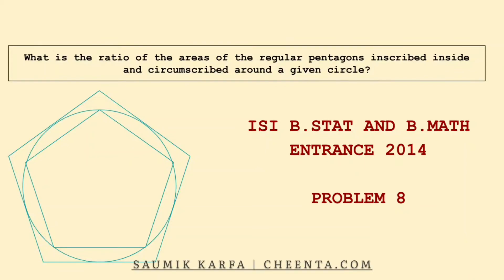Here is the ISI B-STAT and B-MATH entrance 2014, problem number 8. This problem asks: what is the ratio of areas of the regular pentagons inscribed inside a circle and circumscribed around a given circle?